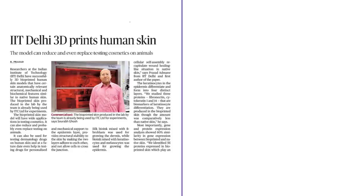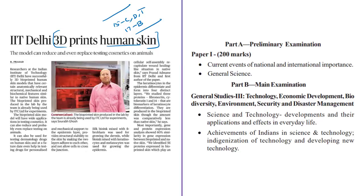The next article is about 3D bioprinted human skin, appearing on page 15 in Chennai, Delhi and Thiruvananthapuram editions and page 17 of Bangalore edition. This article is relevant in prelims preparation under current events of national importance and general science, and in mains under GS Paper 3 under science and technology — its developments, applications and effects in everyday life, and achievements of Indians in science and technology.